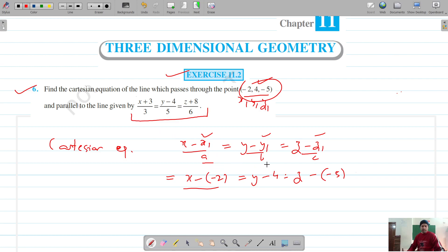a is the direction ratio of the vector to which the line is parallel. The line to which the given line is parallel is given in Cartesian form, so these are our a, b and c. We can put them directly here: 3, 5 and 6.